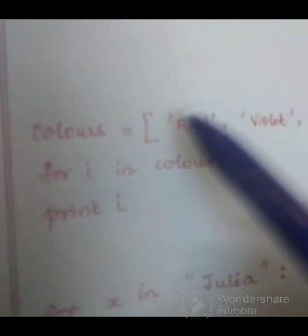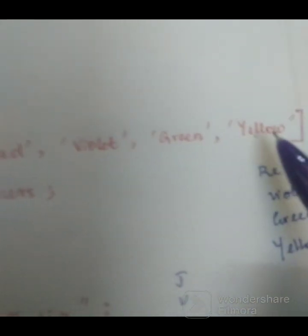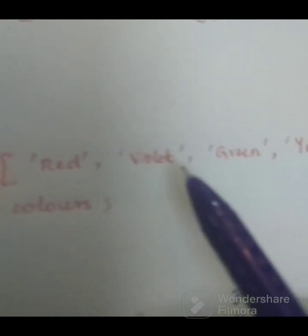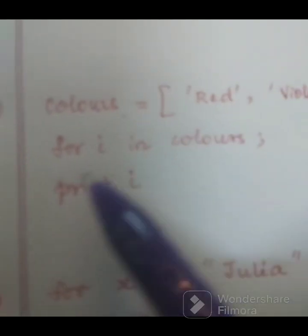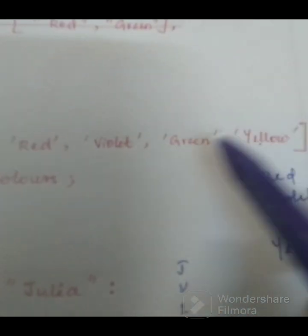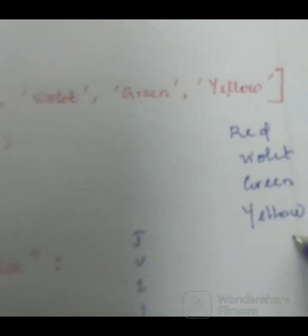If you want to see examples, see here. Colors equal to four values: red, violet, green, yellow. For i in colors, print i. So red, violet, green, yellow will be printed.